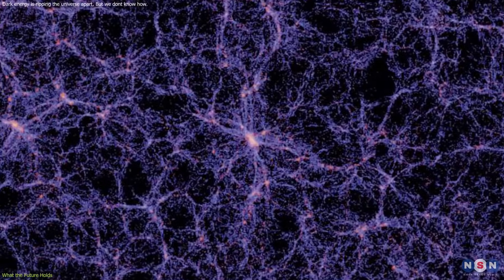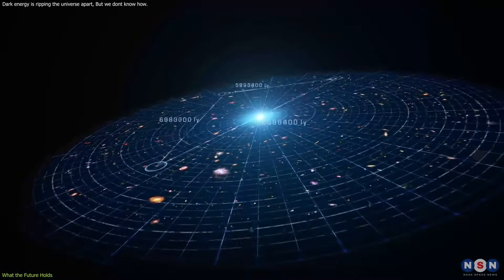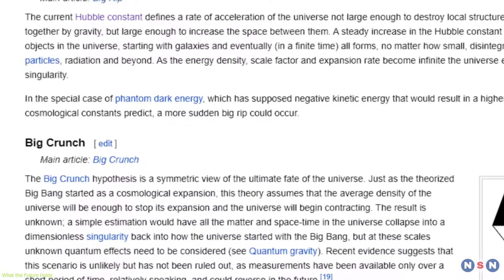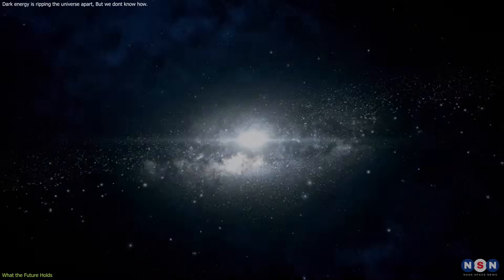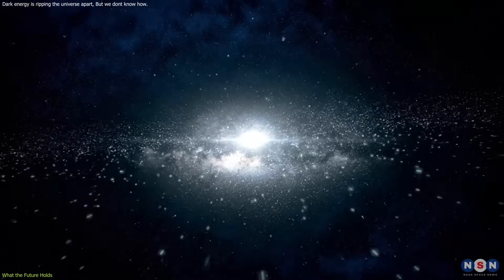On the other hand, if dark energy becomes weaker over time, it can reverse the expansion of the universe and cause it to contract at an accelerating rate. This is known as the Big Crunch Scenario, where the universe will collapse into a singularity of infinite density and zero size, similar to the Big Bang in reverse.